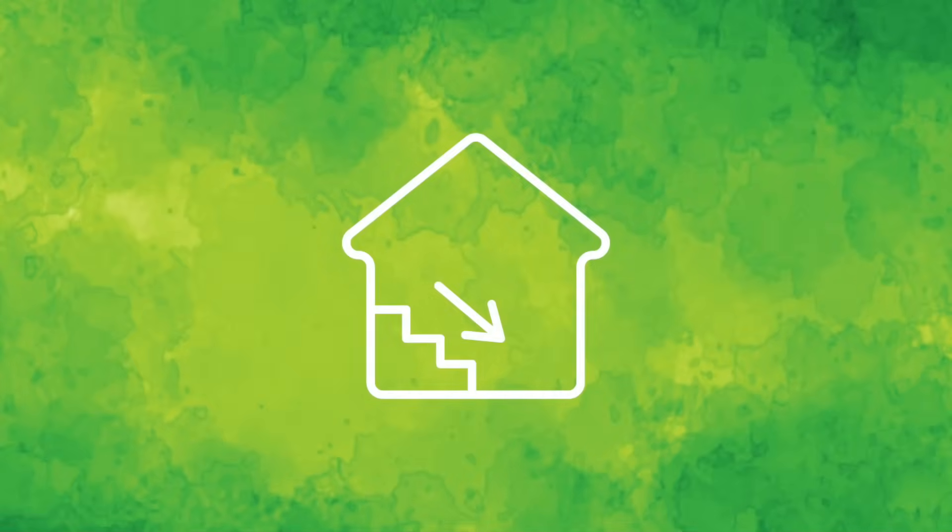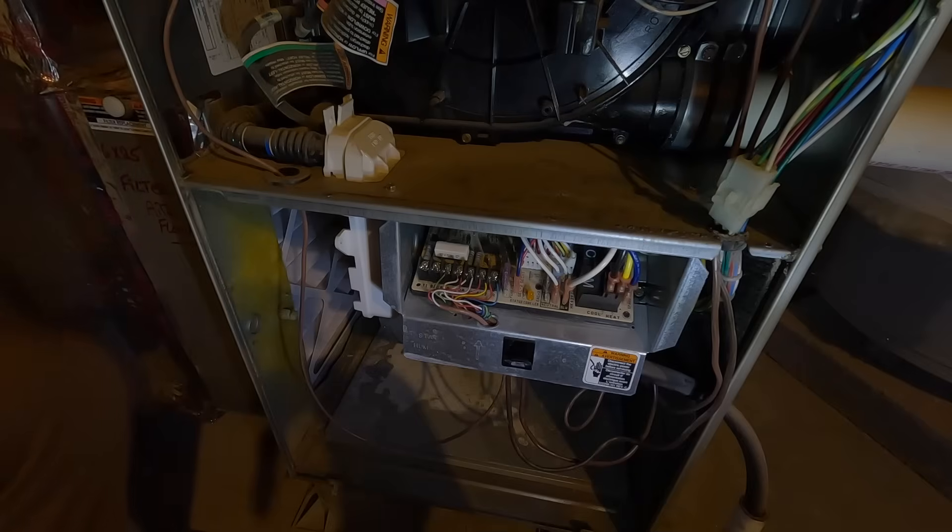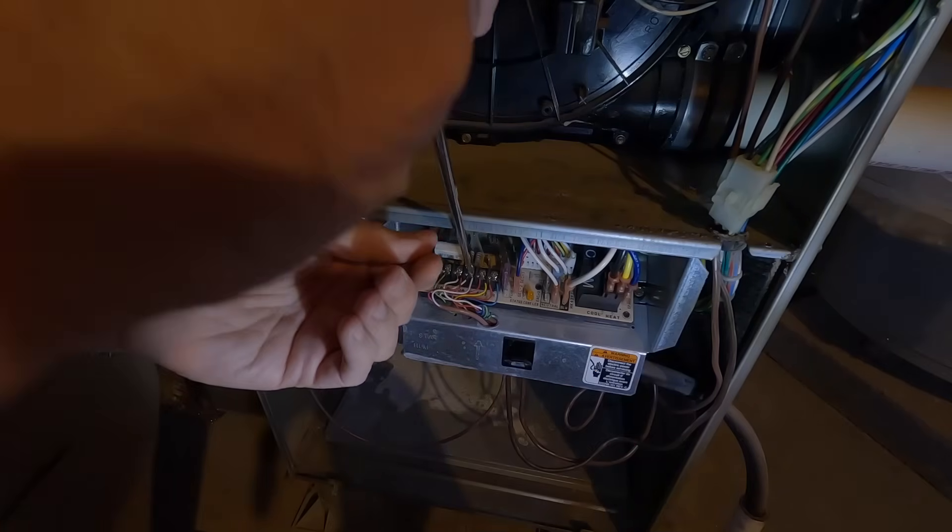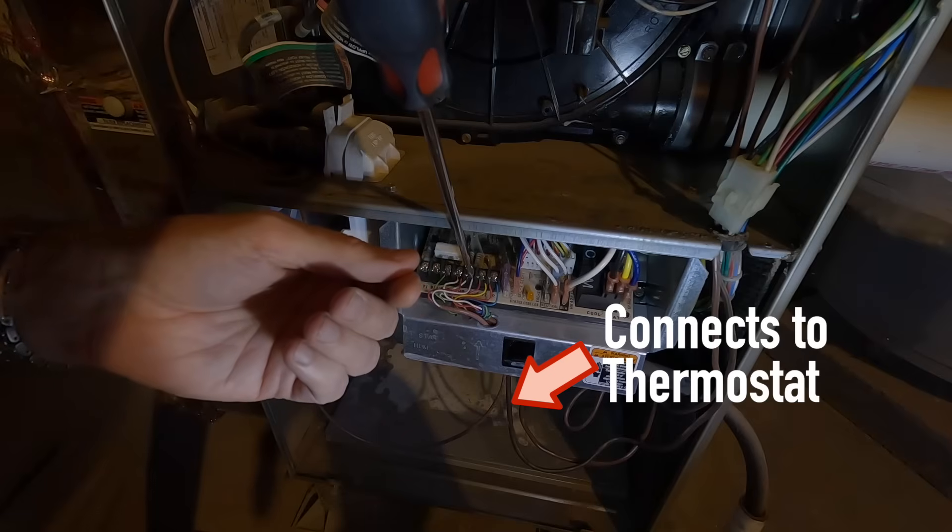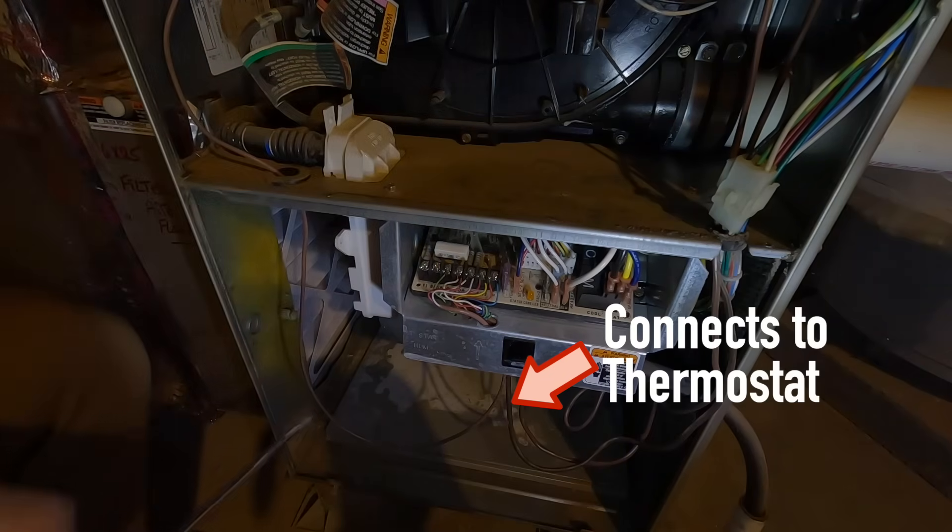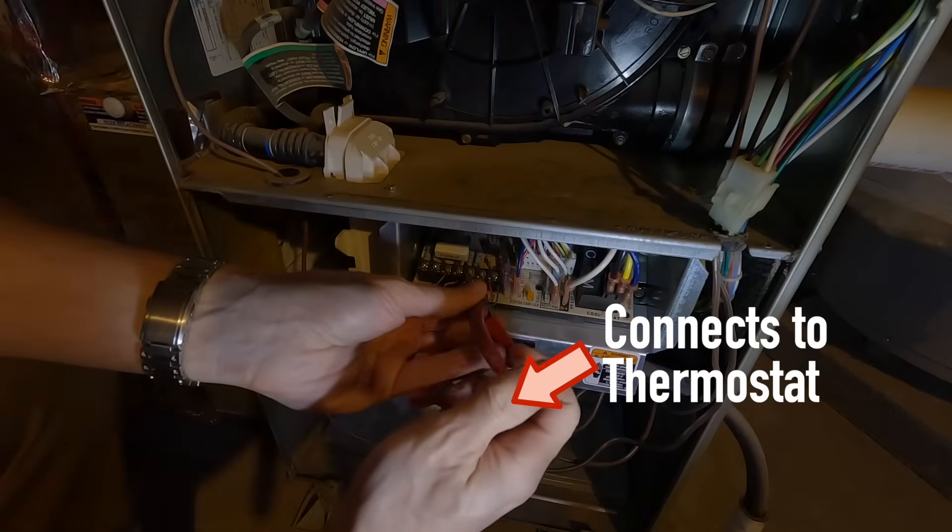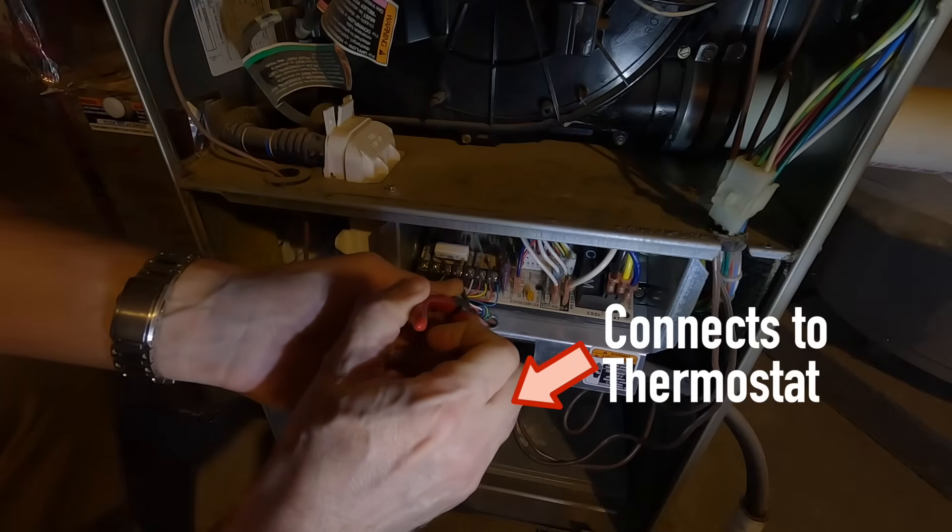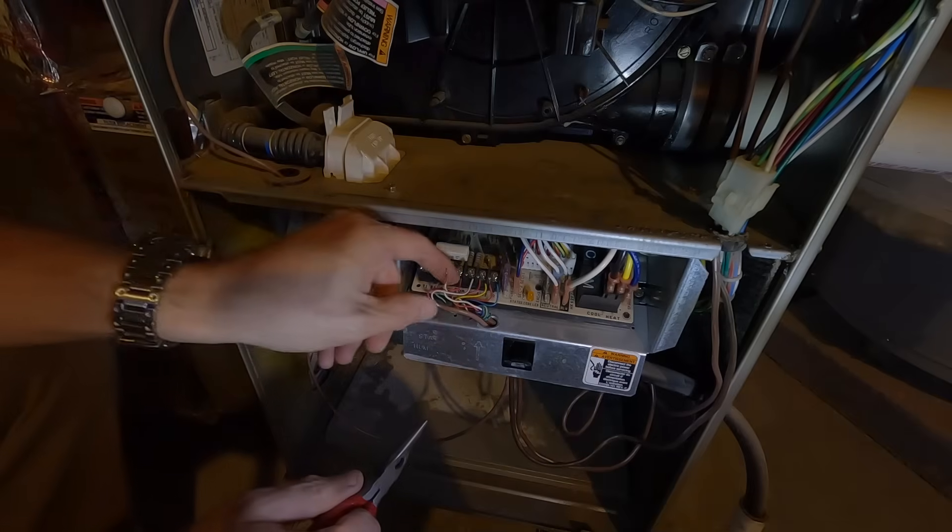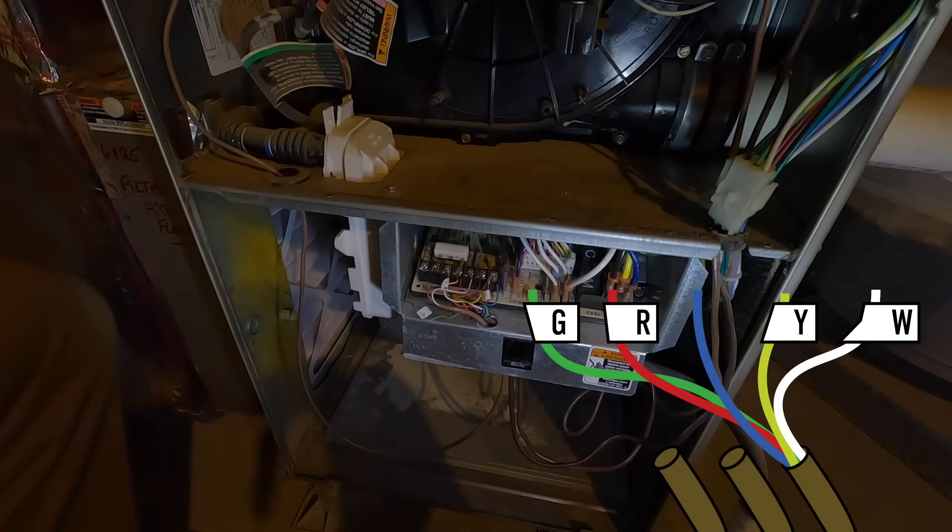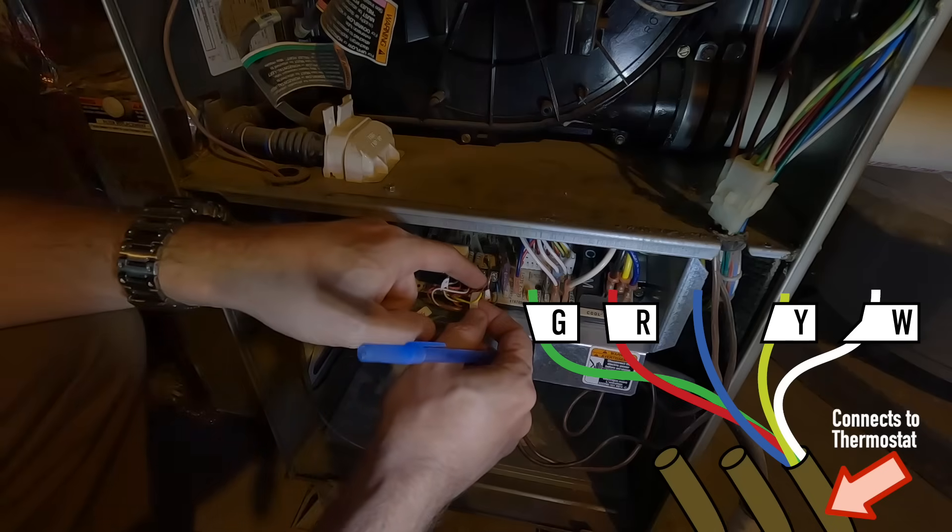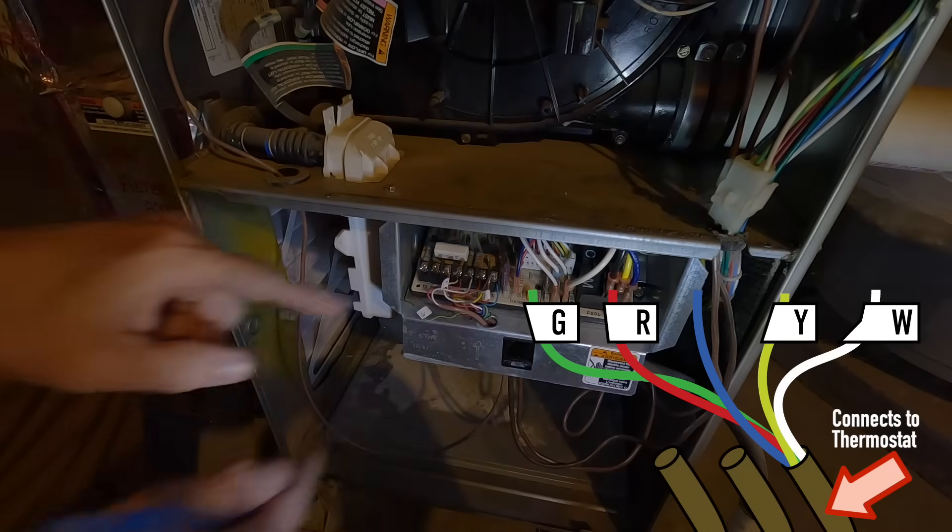To the basement. Now here it can get confusing because I have three brown wires. It's only this wire that you need to manipulate. Everything else has to stay where it is. That's why it's important to take a picture of this before you start. Now you label four of these wires. Again, the wires that go to the thermostat. Only those. Finishing up the labels. Everything's looking good.